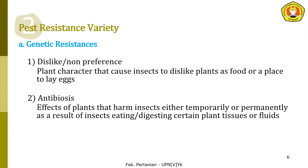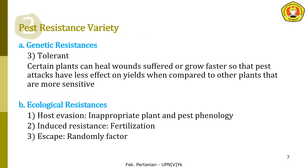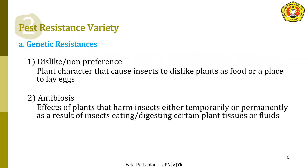The next technique is pest resistant variety, or plant resistance. There are two types of plant resistance. The first is genetic resistance. Number one within genetic resistance is non-preference or 'dislike' — this is a plant characteristic that causes insects to dislike the plant as food or as a place for laying eggs. (Sifat bawaan tanaman yang menyebabkan serangga tidak menyukai tanaman tersebut baik untuk makan maupun untuk meletakkan telurnya.)